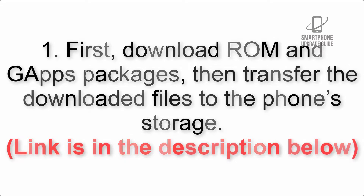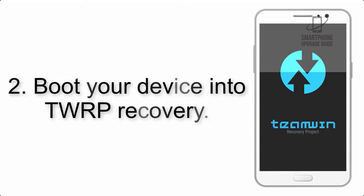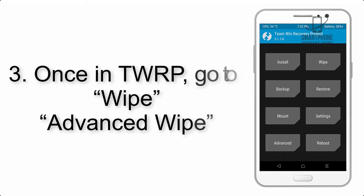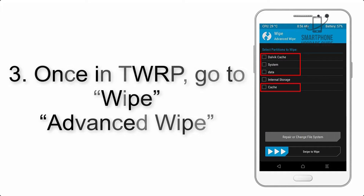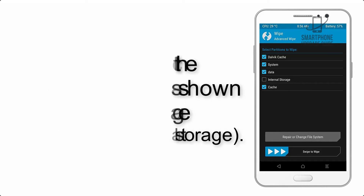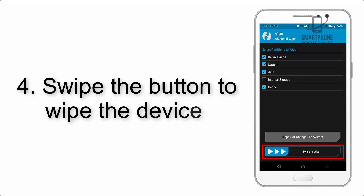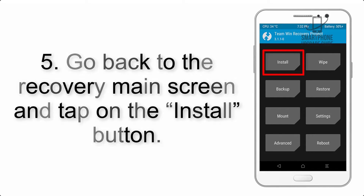Step 2: Boot your device into TWRP recovery. Once in TWRP, tap on Advanced Wipe and select the checkboxes as shown in the image, excluding internal storage. Step 4: Swipe the button to wipe the device.